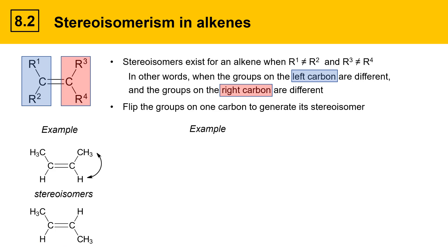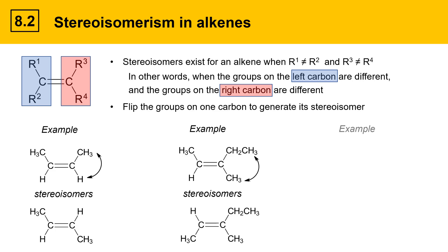Here's an example with a trisubstituted alkene. Look at the left carbon — ask whether the two R groups are different, and they are. Then check the right carbon — if those two groups are also different, then the molecule has stereoisomers, and it does. To find the stereoisomer, flip any two groups; here I'm flipping the groups on the right carbon. In another example with a trisubstituted alkene where the left carbon has two methyl groups, those groups are the same, so even though the right carbon has two different groups, this molecule will not have stereoisomers.